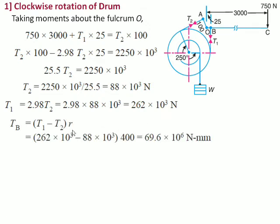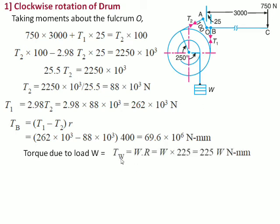Now braking torque TB equals T1 minus T2 multiplied by R. R is 400, we have taken it in millimeters, therefore this multiplication T1 minus T2 and R will give 69.6 into 10 raise to 6 newton-mm. So now the torque due to this load W. Now load W is subjected to this radius of the barrel. So torque due to this load W will be W into capital R. Now capital R is 225, so let it be 225 times W in newton-mm.